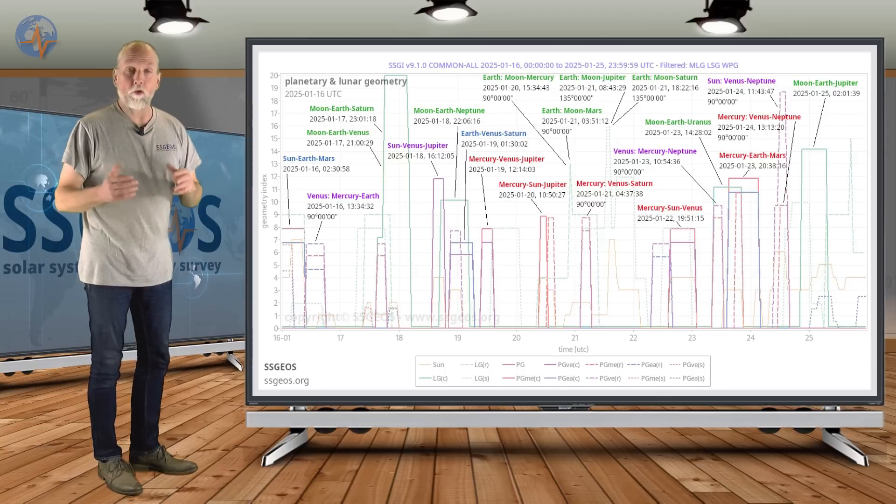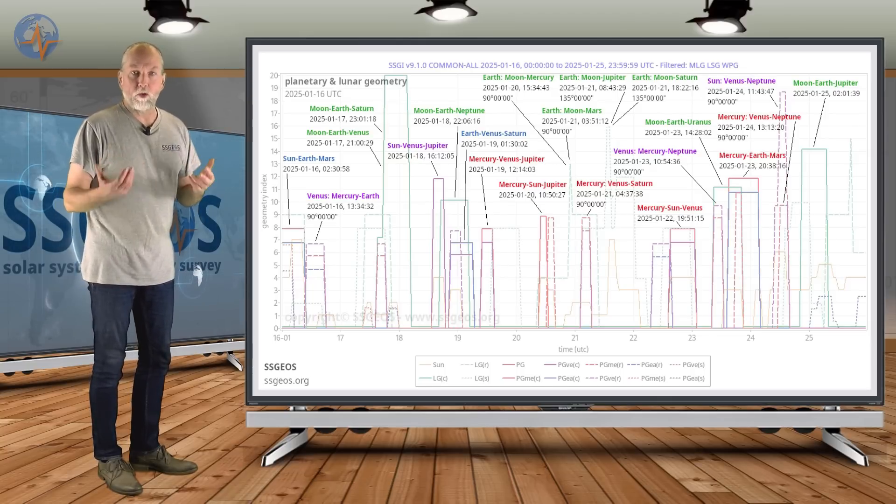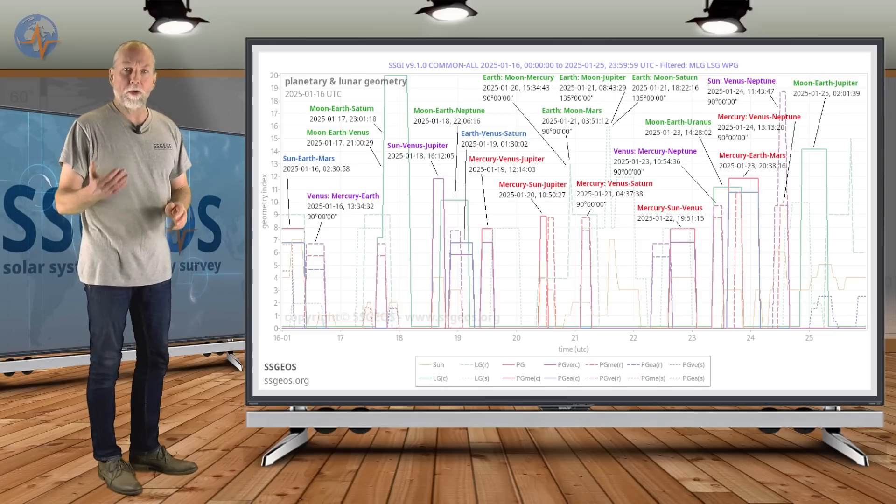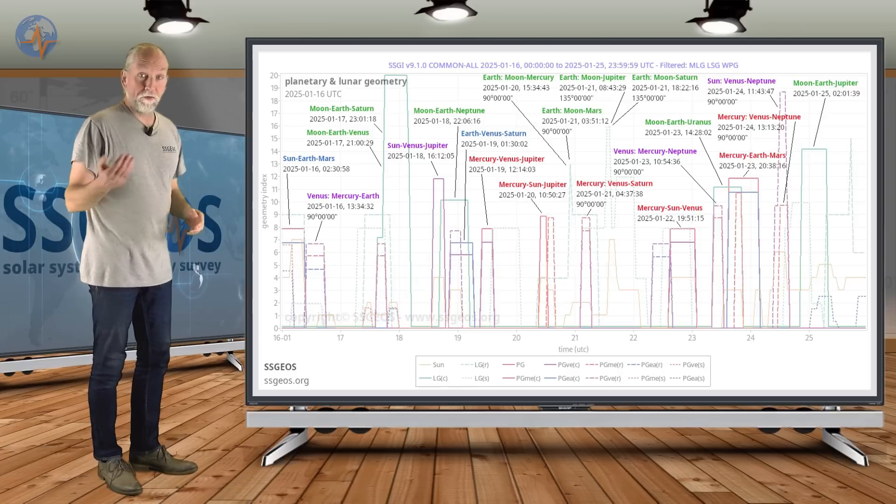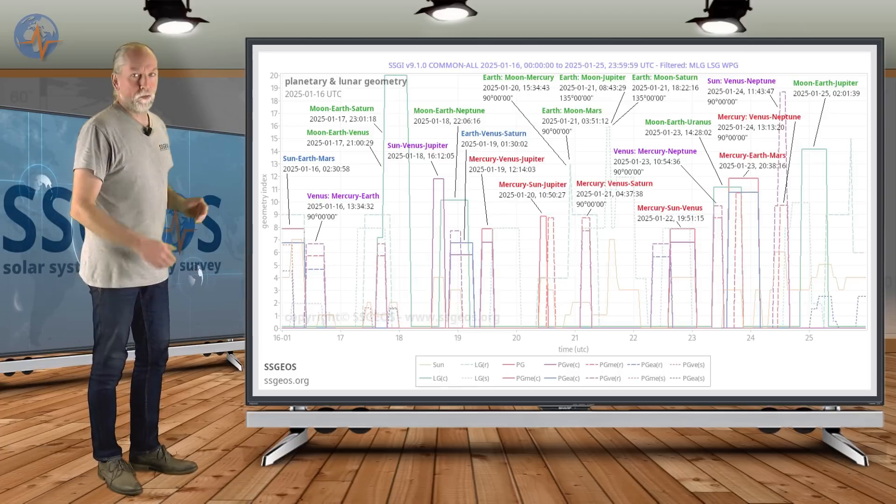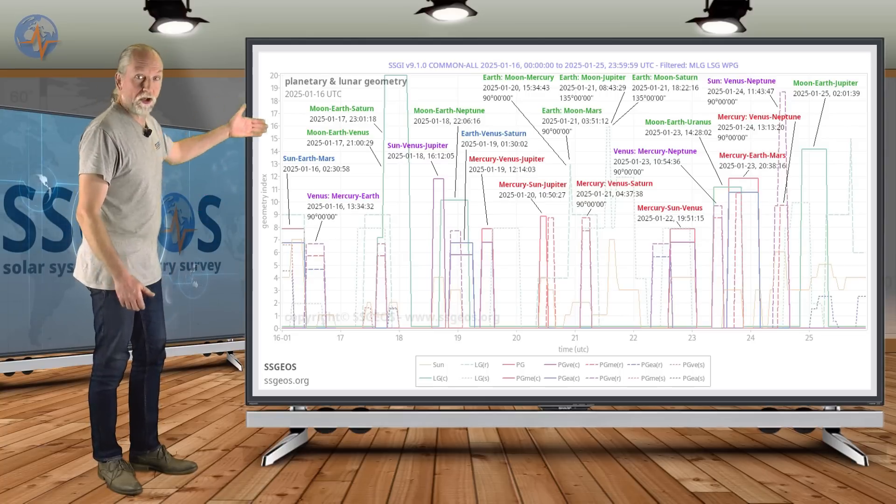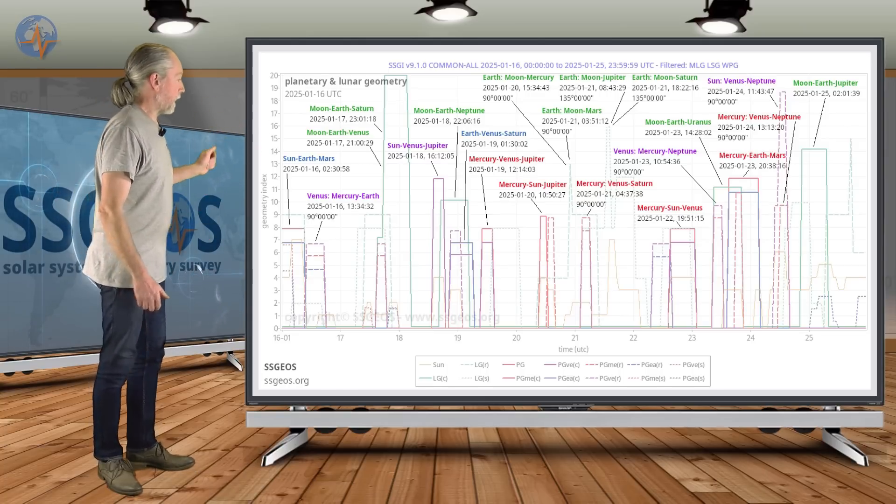really critical lunar geometry. You already know that the moon made critical geometry of Saturn and Jupiter this month, that already resulted in a 7.1 earthquake in China just north of Nepal. And that geometry will continue and also additional lunar geometry will be in there. These are the green labels. So let's have a look.